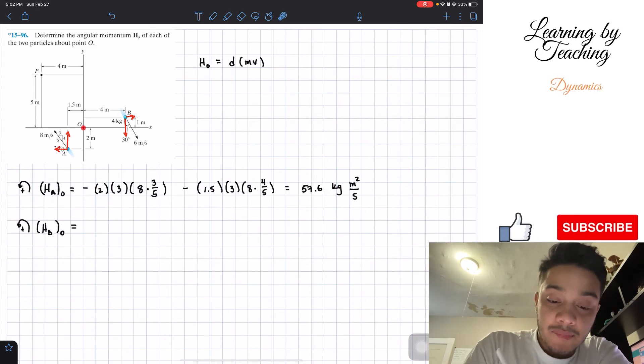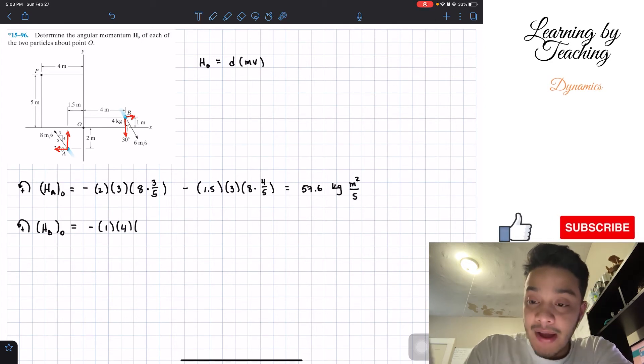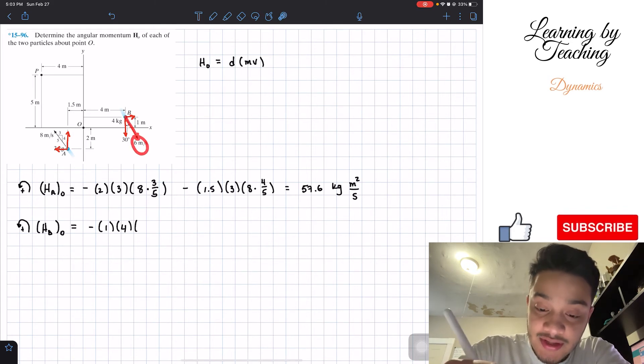Let's start with the x component. The x component, if I'm holding here and I'm going around this velocity, will create a negative moment. The distance is one meter, as we can see here, multiplied by its mass, which is four kilograms, multiplied by its velocity. The magnitude of this entire velocity is six, but how much is its x component? It's going to be the magnitude six multiplied by the sine of 30 degrees.